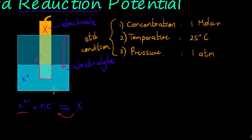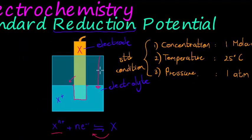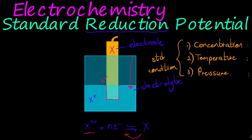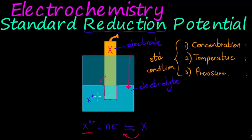What we want to measure is: for each cation we can imagine, what is their ability to attract electrons — their reduction potential? When you get electrons from somewhere it depends on how badly the source wants to keep them. So standard reduction potential is always compared to something else — it's a relative measurement.